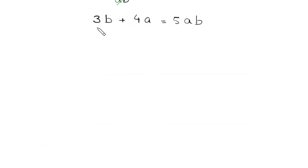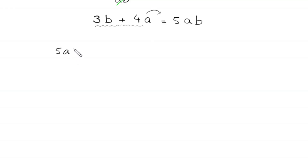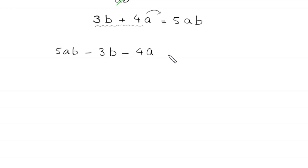Now we move 3b plus 4a to the right-hand side, so this will become 5ab minus 3b minus 4a is equal to 0.